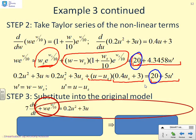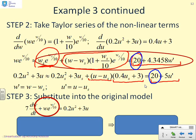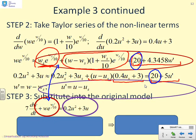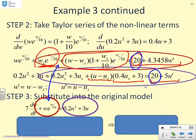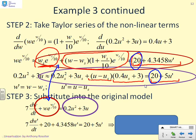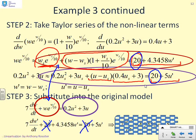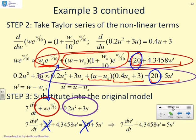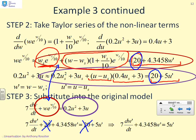Substituting the Taylor series into the original differential equation: where I had w·e^(w/10) I enter the first-order Taylor series 20 + 4.3458·w', and where I had 0.2u² + 3u I substitute 20 + 5u'. So I get 7(dw'/dt) + 20 + 4.3458·w' = 20 + 5u', and clearly those two 20s cancel, leaving 7(dw'/dt) + 4.3458·w' = 5u' — again a simple first-order linear model.